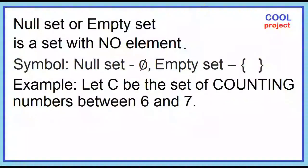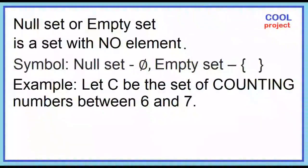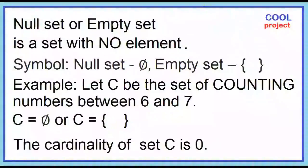Example: Let C be the set of counting numbers between 6 and 7. There is no counting number between 6 and 7, so set C is a null set or empty set. The cardinality of set C is 0.